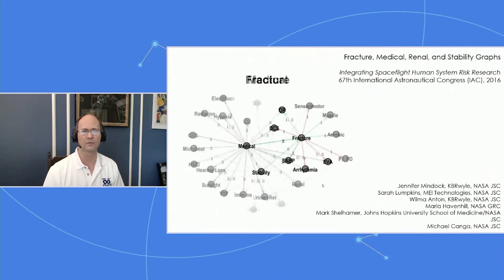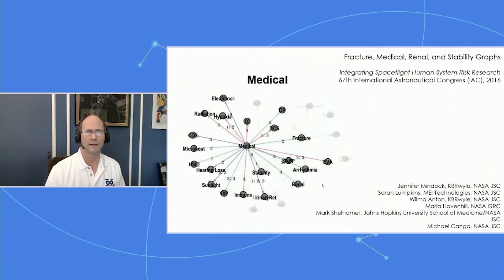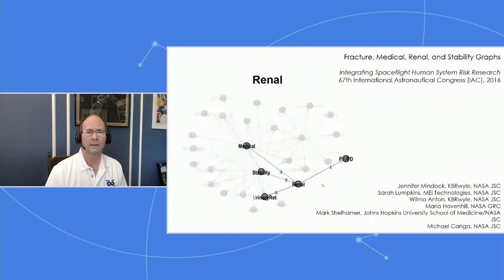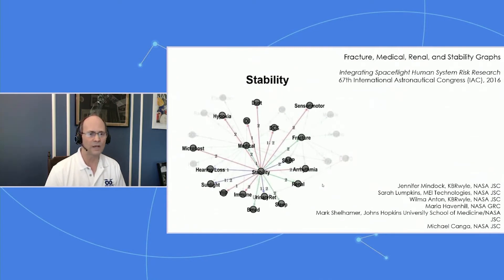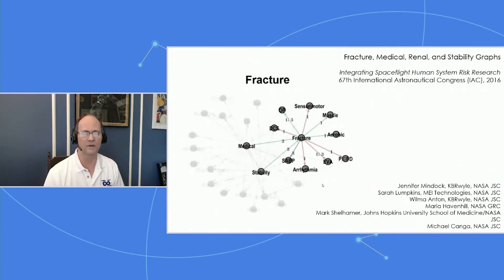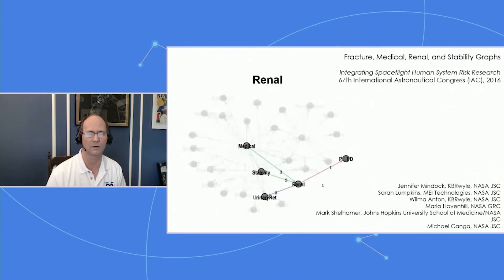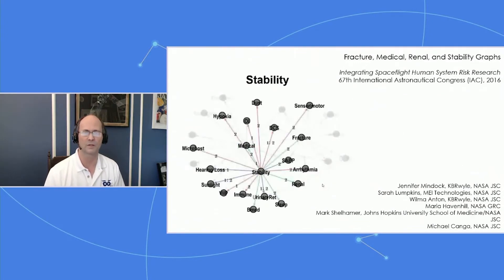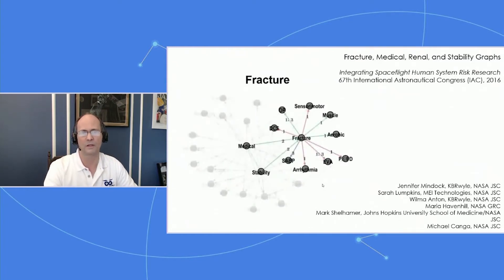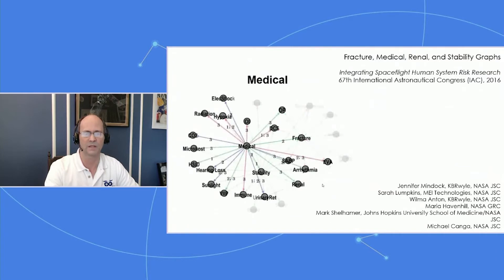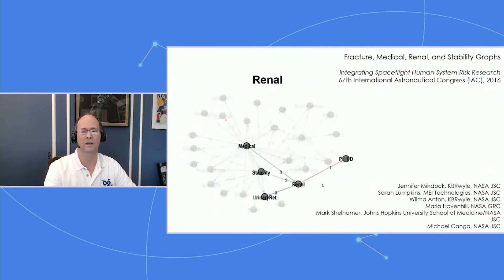As you cycle through this visualization — medical, renal, stability — your brain begins to see that this structure is in fact a three-dimensional structure. As you pull these things out towards you and different groups come into focus, you can see it's actually three-dimensional. The problem is that it has been flattened to a two-dimensional screen, and when it becomes flattened, it becomes dense and hard to see the connections and insights the data set can provide.